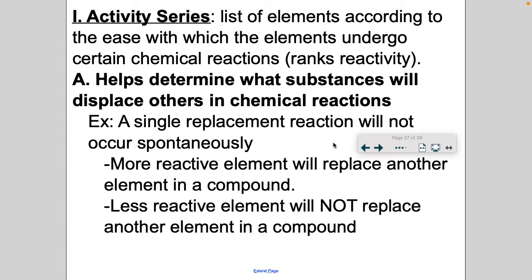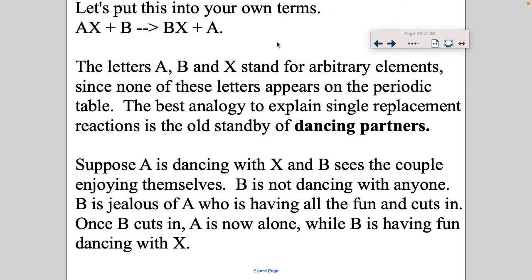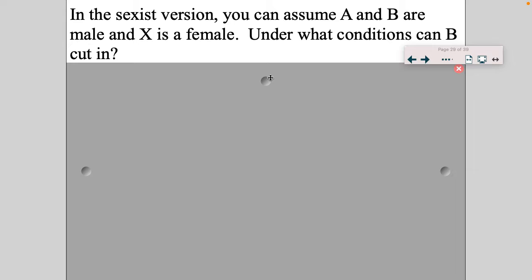So I'm going to show you how this works. I'm going to use a really sexist analogy, but you know what, this is how my chemistry teacher taught it and it sticks with me today. Let's just put this: we talked about single replacement reactions, right? So we have a compound here, A paired up with X, and then B by itself. And if you add B to the mix and B swaps places, now B is with X. The best analogy is to consider A and X as dancing partners. Suppose A is dancing with X, and B sees the couple enjoying themselves. B's not dancing with anyone. B's jealous. Cuts in, and now A is all alone and B is having fun dancing with X.